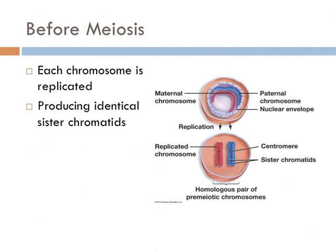An unreplicated chromosome is a single thread, and a replicated chromosome is paired. The key is to recognize that both unreplicated and replicated chromosomes are considered single chromosomes, even though replicated chromosomes have two copies.